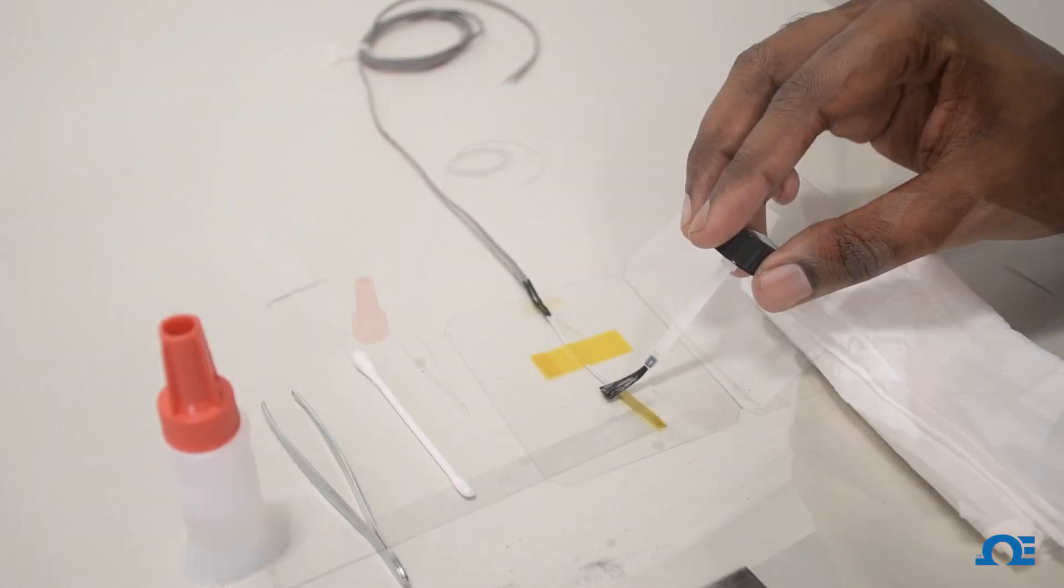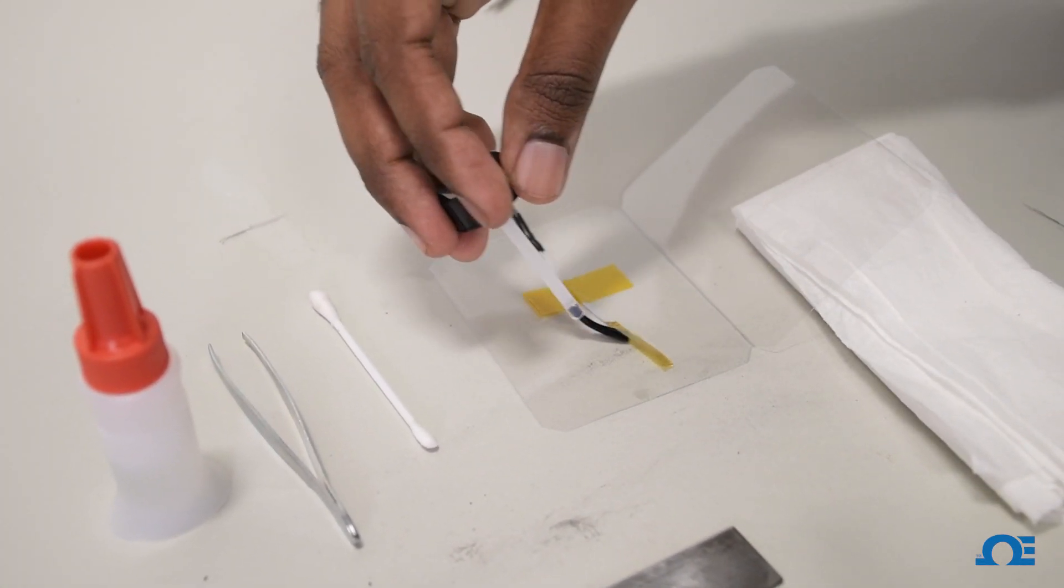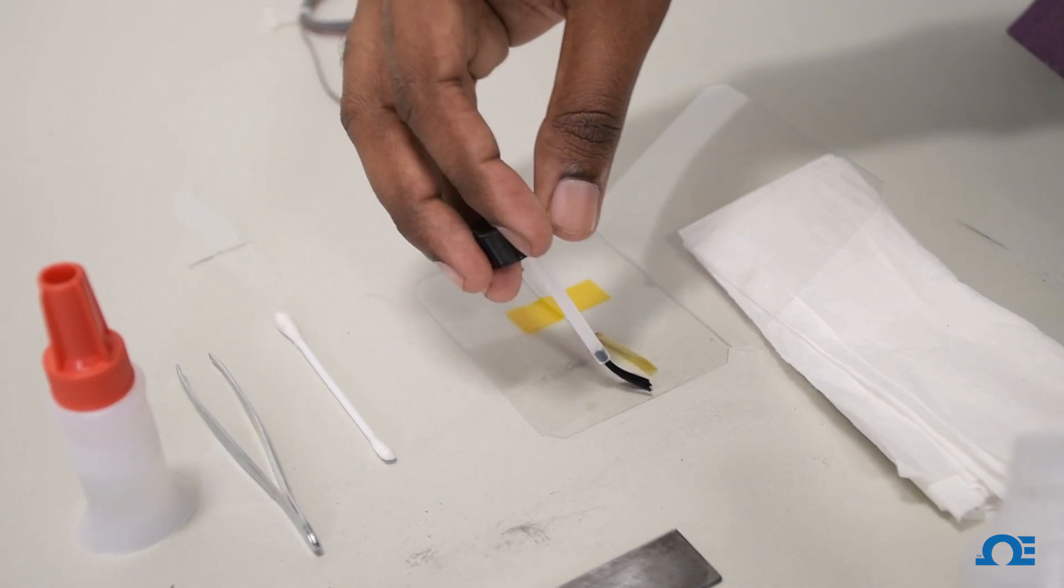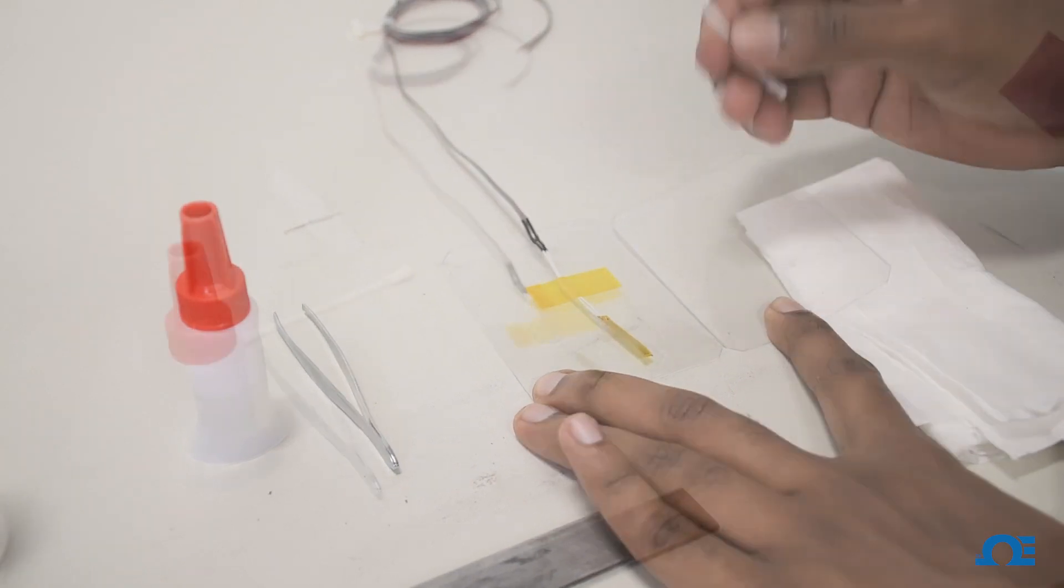After that, take the solvent cleaner and prep the surface of the strain gauge just to make sure that we don't have any contaminants or dirt sticking on the strain gauge. Now we can use a cotton swab and wipe the surface of the strain gauge clean.